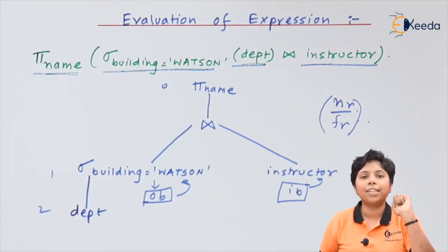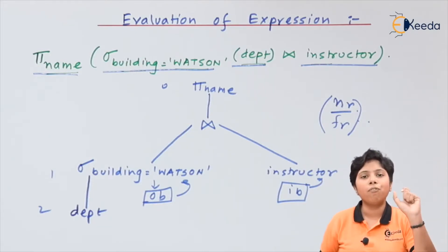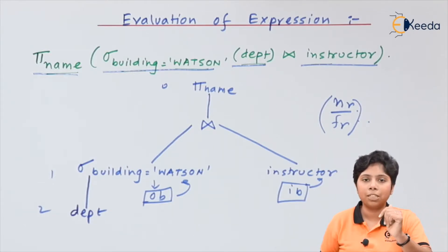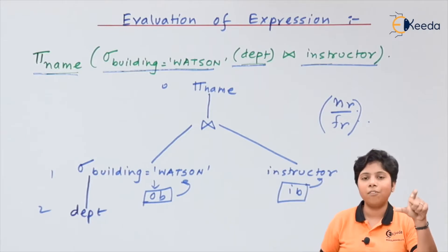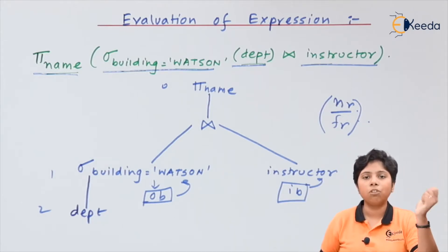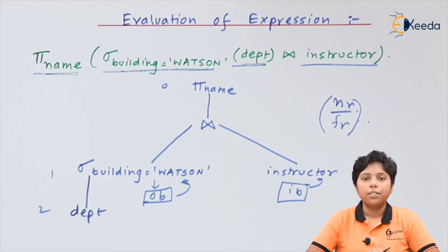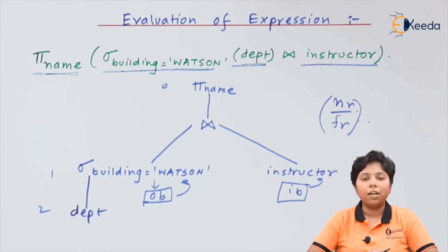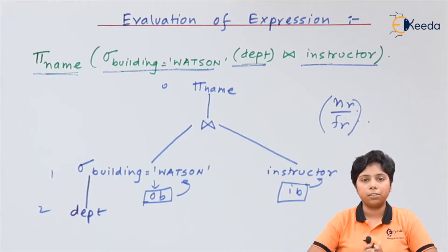To solve this, we use pipelining — every instruction is evaluated spontaneously and simultaneously with each other, and all results are combined at the end to form the final result. There are two types of pipelining: demand-driven pipelining and producer-driven pipelining.